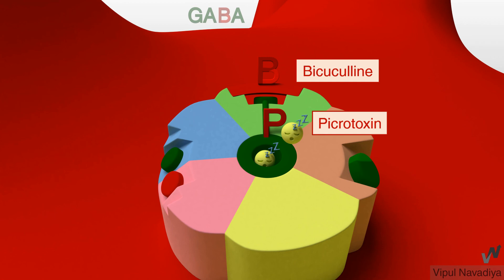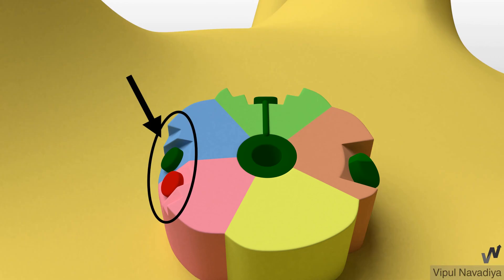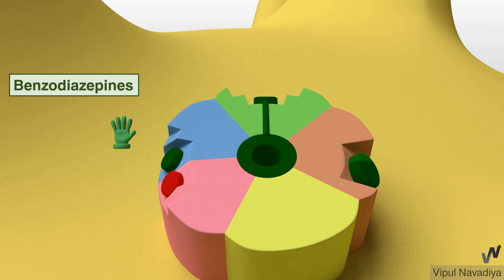These agents don't have much therapeutic utility so without wasting time on them we will go to the benzodiazepine binding site. Here we have the benzodiazepine group of drugs and some new non-benzodiazepine hypnotics like zolpidem, zaleplon all represented by diazepam here.